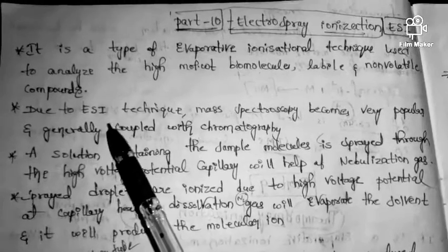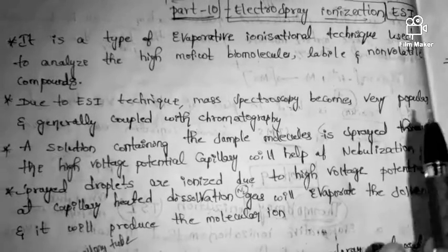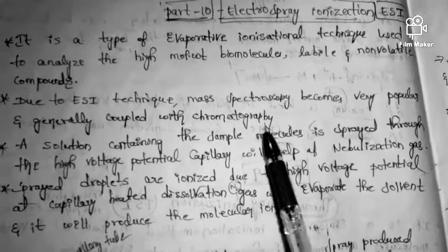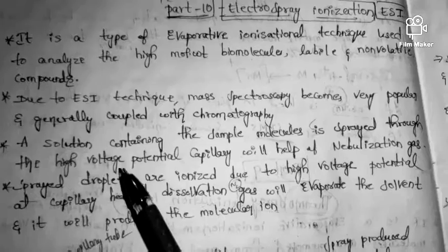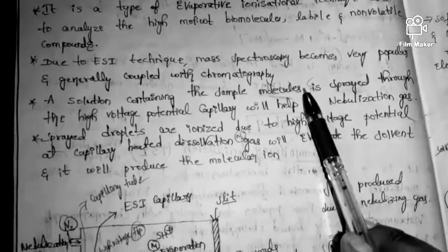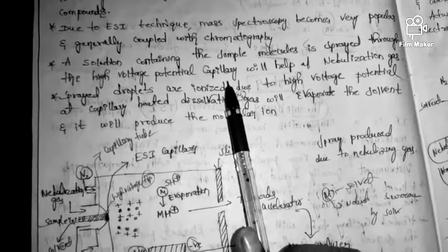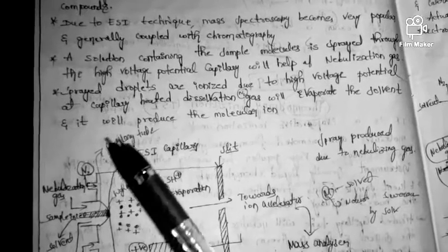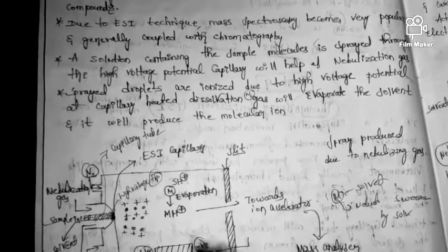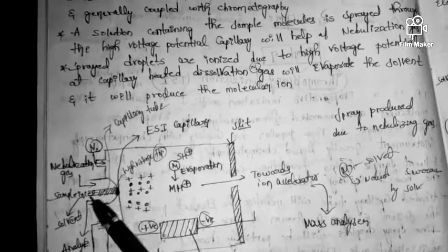Due to the electrospray ionization technique, mass spectrometry becomes very popular and is generally coupled with chromatography. In ESI, a solution containing the sample molecules is sprayed through a high voltage potential capillary.